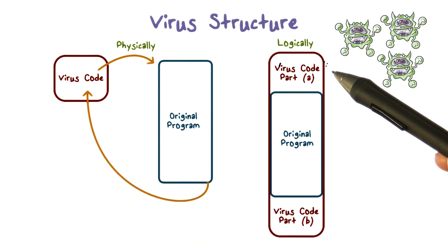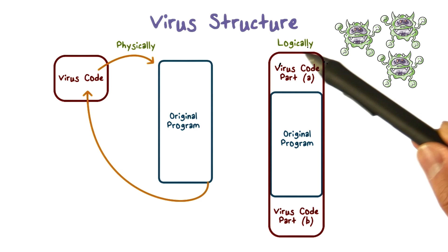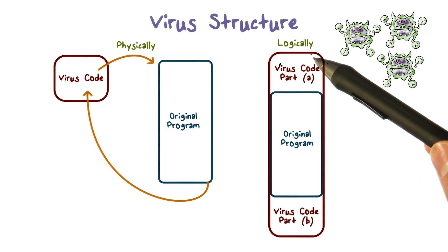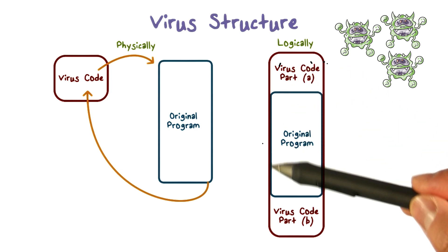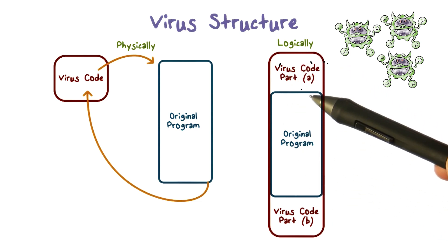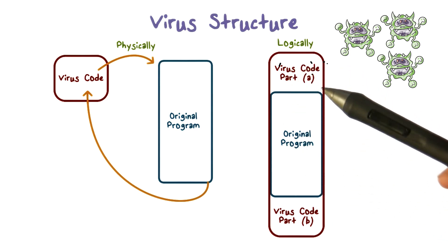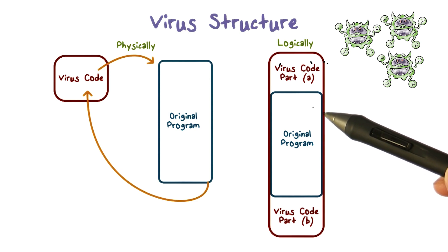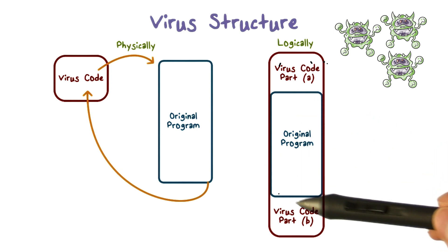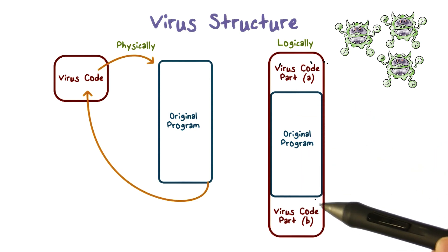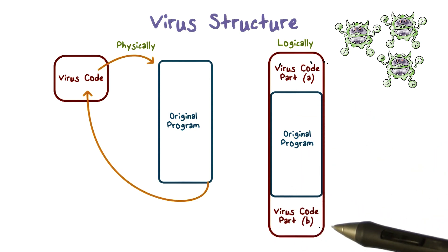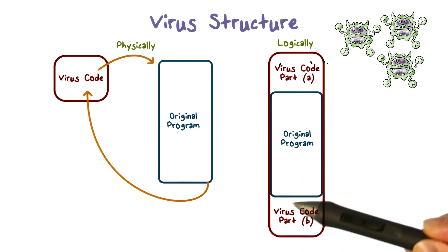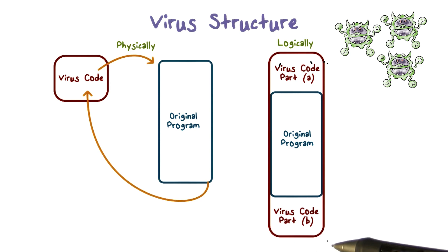Logically, when the infected program runs, the virus code runs first. Then the original program will run so that the user will not suspect that the program has been infected. And at the end, there could be some virus code that does cleanup to avoid detection.